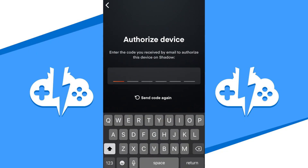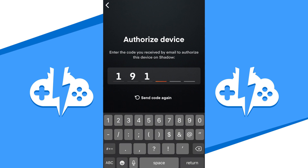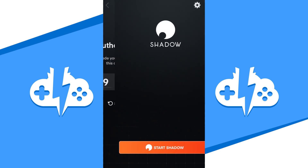Since this is a new device for your account, it will send you an authorization email with the code to authorize the new device you were trying to use for your Shadow PC. Fill in the authorization code once you've received it to continue the login process.